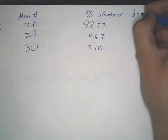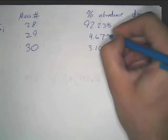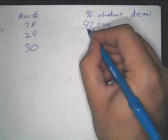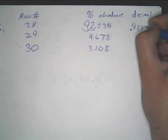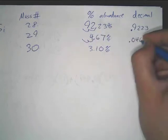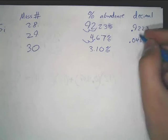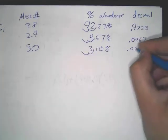First thing you have to do is convert to decimal form. Now these are all percentages, remember that. So you're going to move the decimal over two spots. So that will become .9223. This will become .0467. Then this will become .0310.